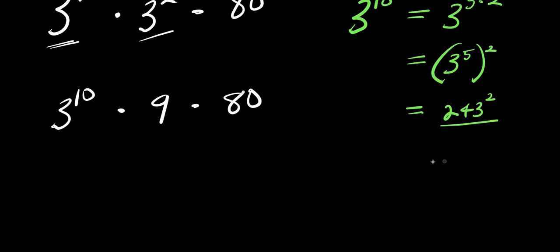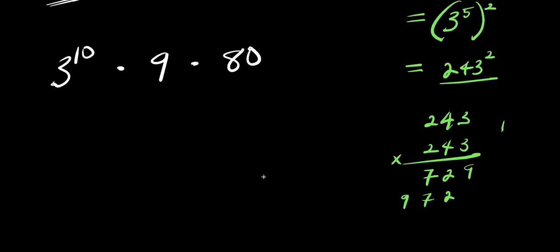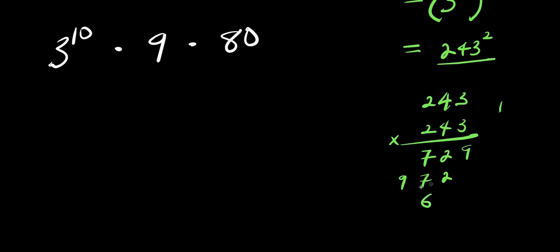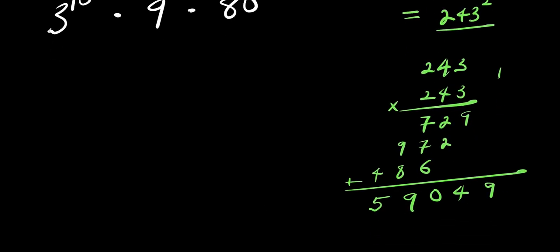We need to find the value of 243 squared, that is 243 times 243. Working through: 3 times 3 is 9; 3 times 4 is 12, carry 1; 3 times 2 is 6 plus 1 is 7. Then 4 times 3 is 12, carry 1; 4 times 4 is 16 plus 1 is 17; 4 times 2 is 8 plus 1 is 9. Then 2 times 3 is 6; 2 times 4 is 8; 2 times 2 is 4. Adding: 7 plus 7 is 14 plus 6 is 20; carry 2; 11 plus 8 is 9, carry 1; and so we get 59,049. So the value of 3 power 10 is 59,049.